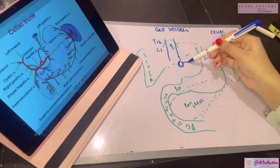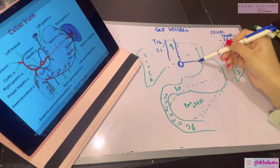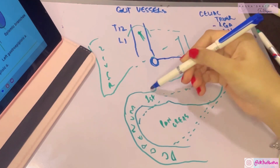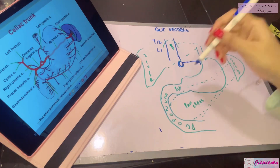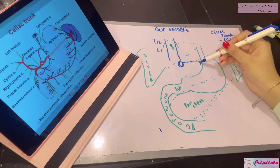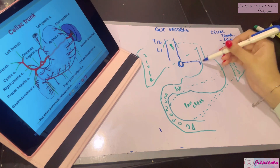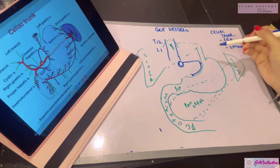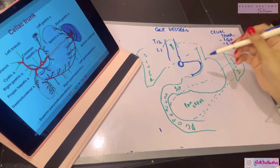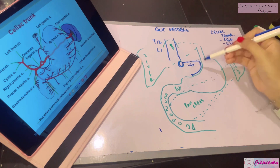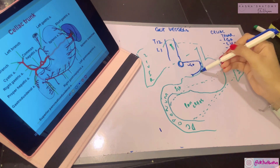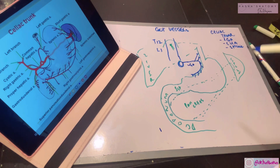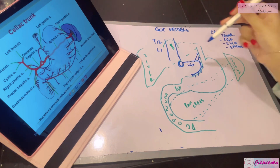The left gastric artery runs towards the left and goes close to the cardiac end of the stomach, after which it enters the lesser omentum. When it reaches close to the lesser curvature of the stomach, it runs along the curvature and ends by anastomosing with the right gastric artery. During its course, it gives many gastric branches to supply the lesser curvature of the stomach and also gives a couple of esophageal branches to supply the esophagus.